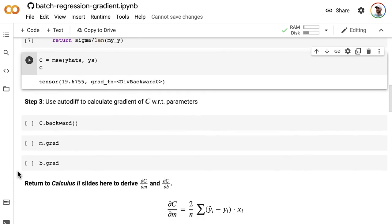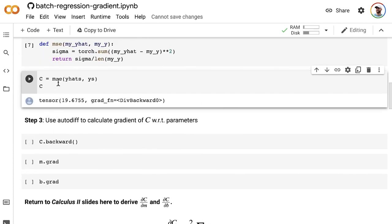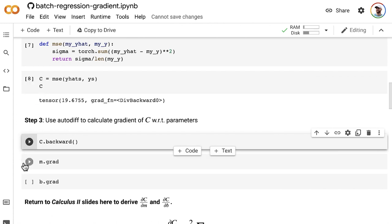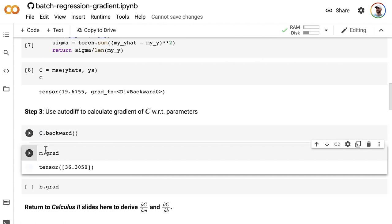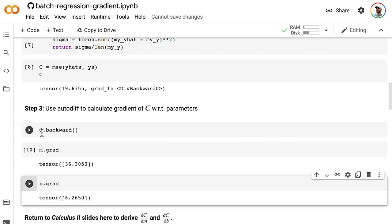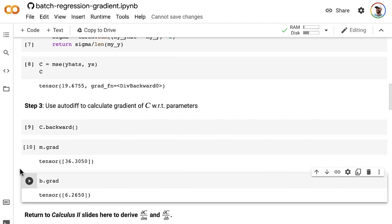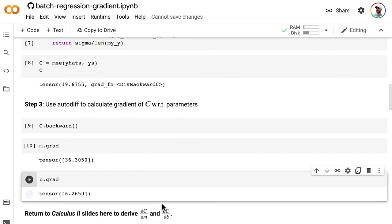In step three, up until now, anytime we've been using mean squared error cost, we've been relying on the PyTorch automatic differentiation library to calculate the gradient of cost with respect to our model parameters. We can simply call the backward method on our cost c, and then we have our mean squared error cost with respect to the model parameter m, which comes out to about 36, and also our mean squared error with respect to the model parameter b, which comes out to about 6. Just as we did in the single-point regression notebook, we're now, in the next video, going to spend time working through by hand to derive del c del m and del c del b ourselves using partial derivative first principles.